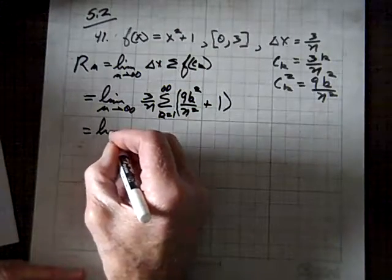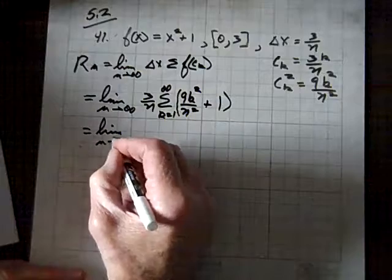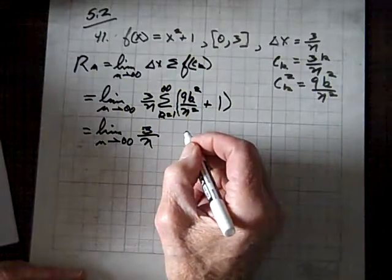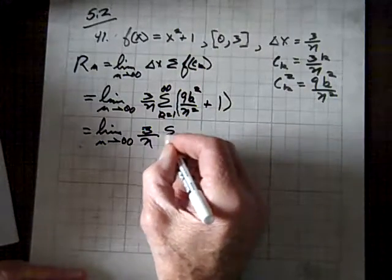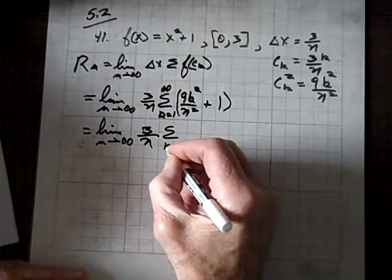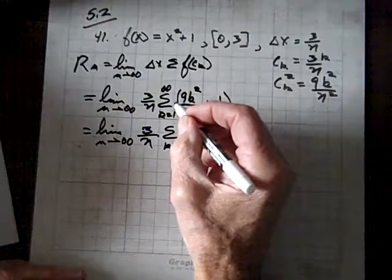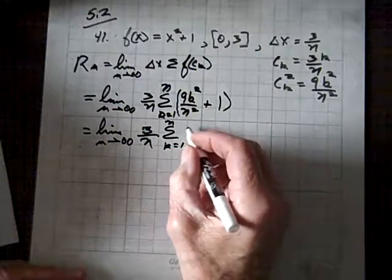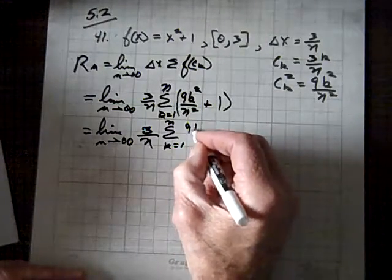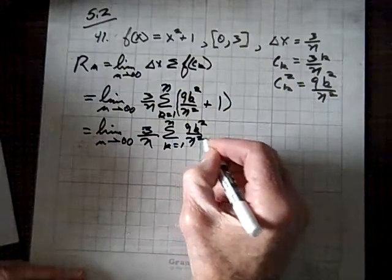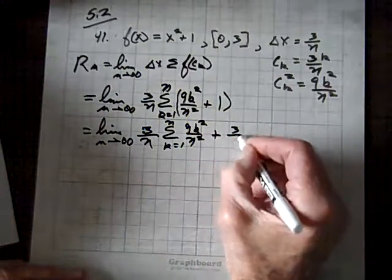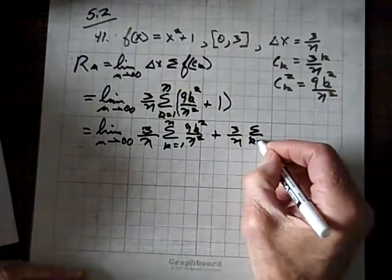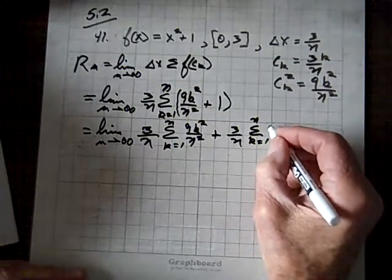We'll put n goes to infinity of 3 over n, and we'll break this up into two limits, and summation, or two summations, k equals 1 to n, not infinity, I beg your pardon, that should be an n there, and an n here, and we'll have 9 k squared over n squared plus 3 over n times the summation of, as k equals 1 to n of 1.